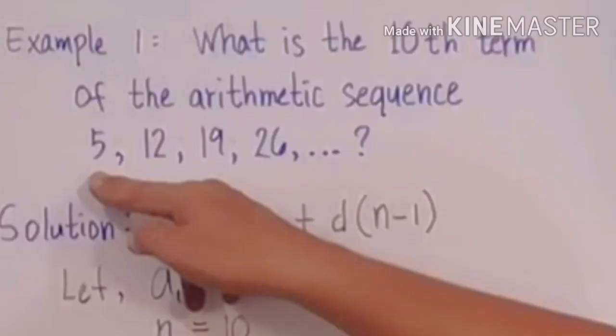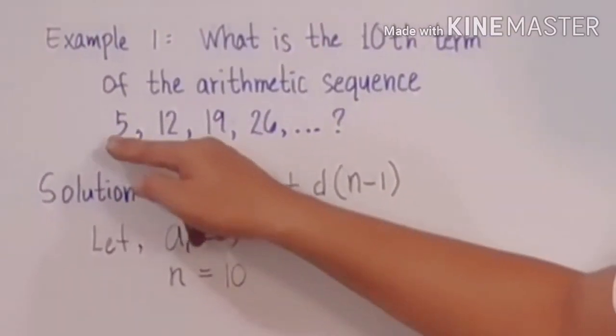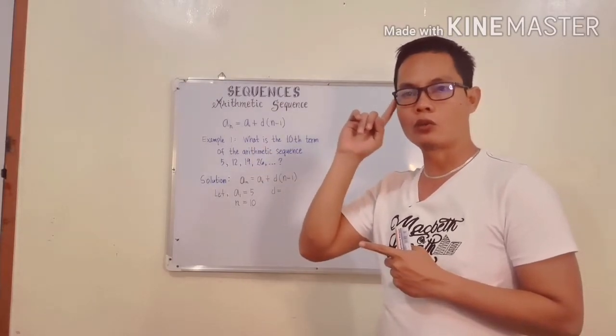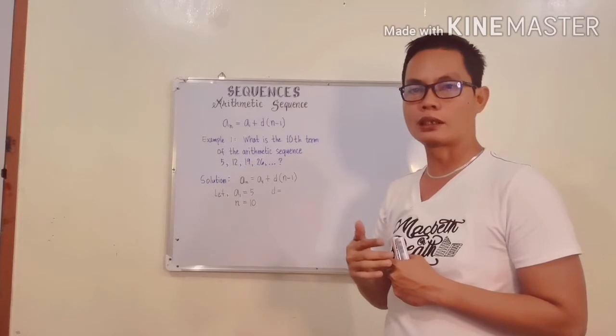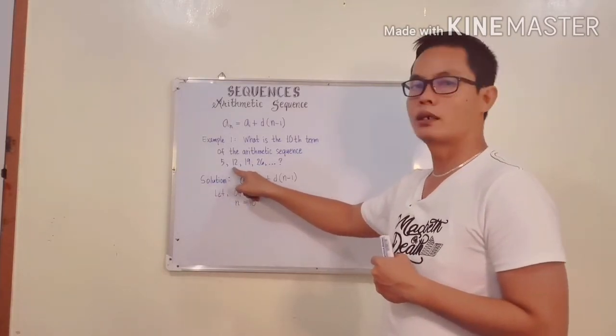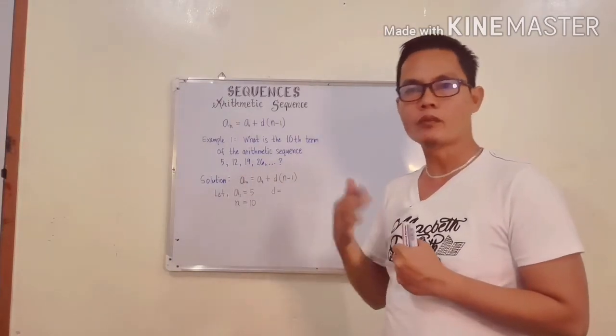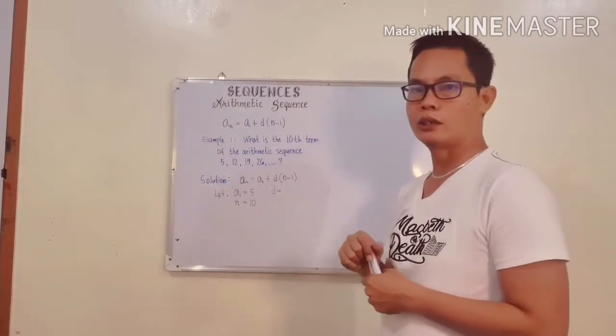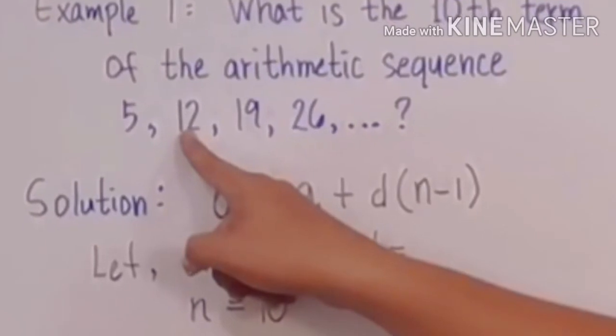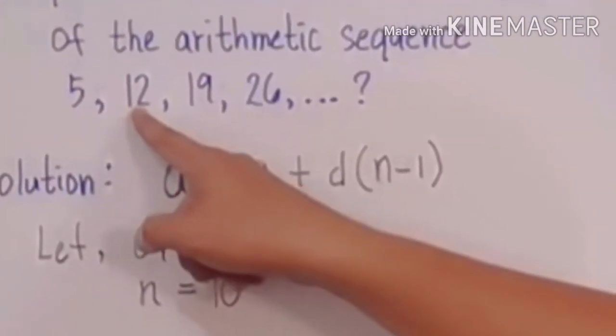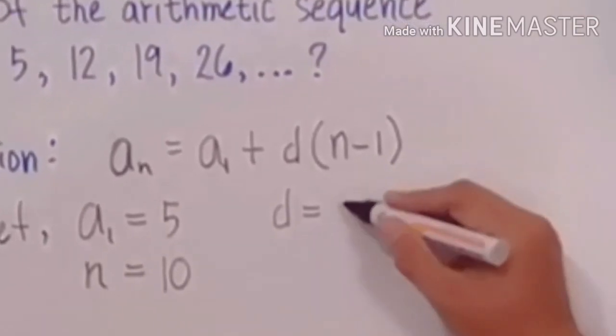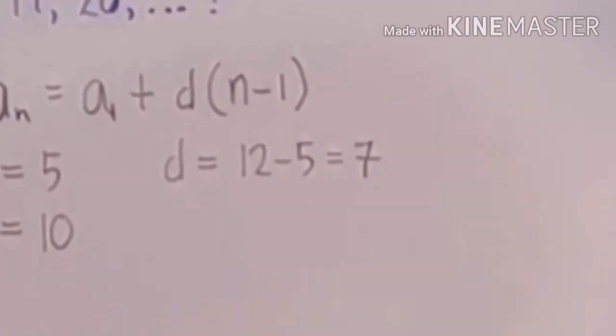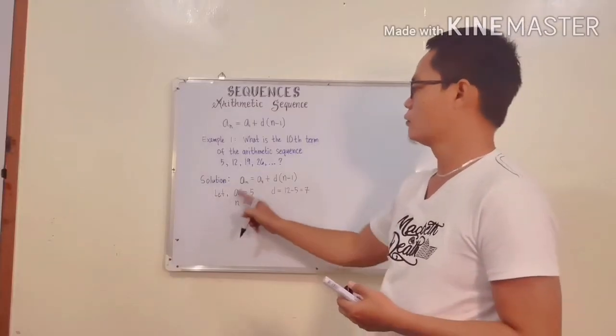We need to get the common difference. When you use the positive common difference, it is based on the given. If the given is ascending order - when I say ascending order, from 5 going to 12, medyo tumataas yung value niya - so tandaan, sa common difference, automatically it should become a positive sign. As you have seen here, from 5 to 12, mentally kaya naman natin sigurong makita kung anong value ng common difference between 5 and 12. Or mathematically, you just subtract this value, the 12 and the term preceding it. So when we subtract 12 minus 5, we have the value of the common difference of positive 7.